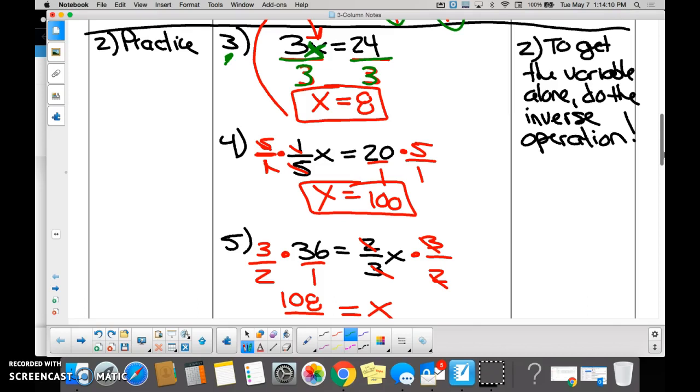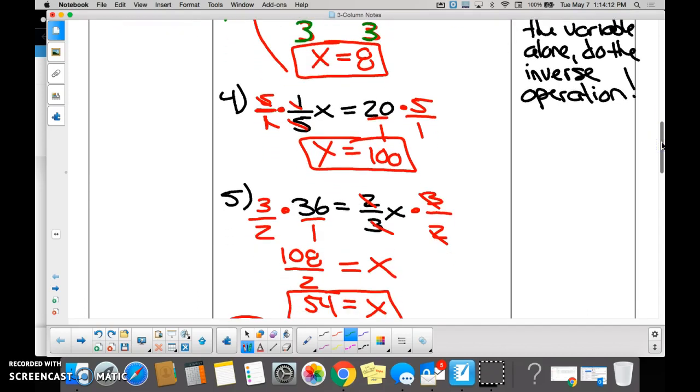Number four, the black writing is my problem. So 1/5x equals 20. What is being done to x? It's being multiplied. So how do you undo multiplication? Divide. So I'm going to rewrite this problem, 1/5x equals 20, and you said to undo multiplication you divide, right? But when you divide by 1/5, what do you notice?